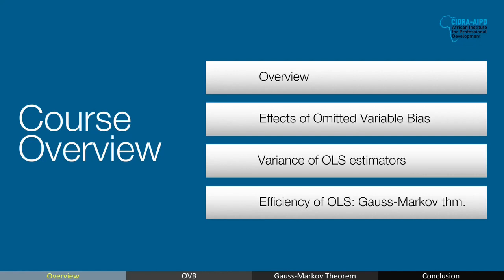We'll talk about what is bias and how it applies to the omitted variables bias, then going into how omitted variables and other factors affect variances. Finally, we will go over the mechanics of the Gauss-Markov theorem to prove that ordinary least square estimates are efficient. We will also have a running example with our code to demonstrate each of these concepts.